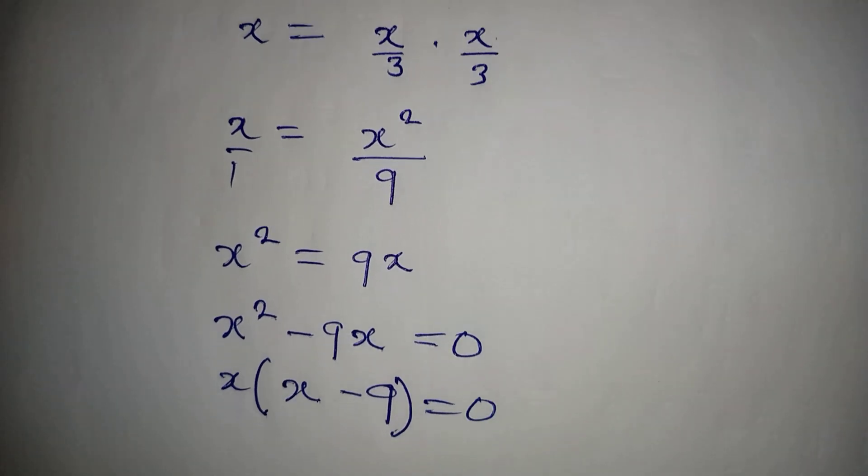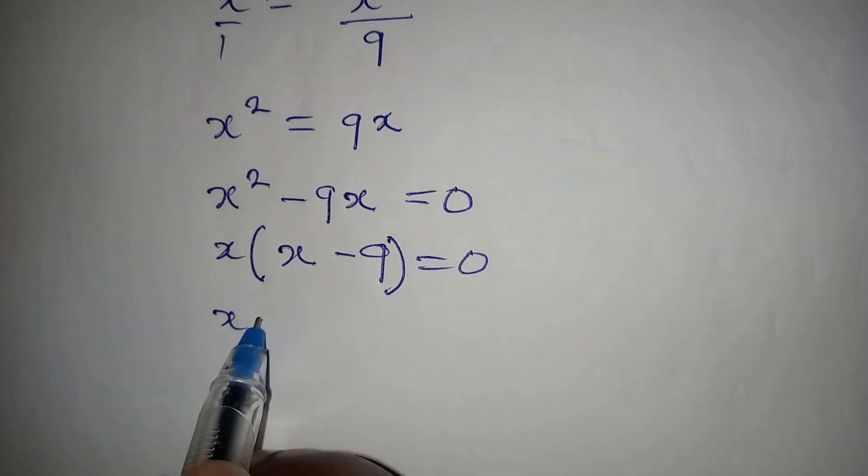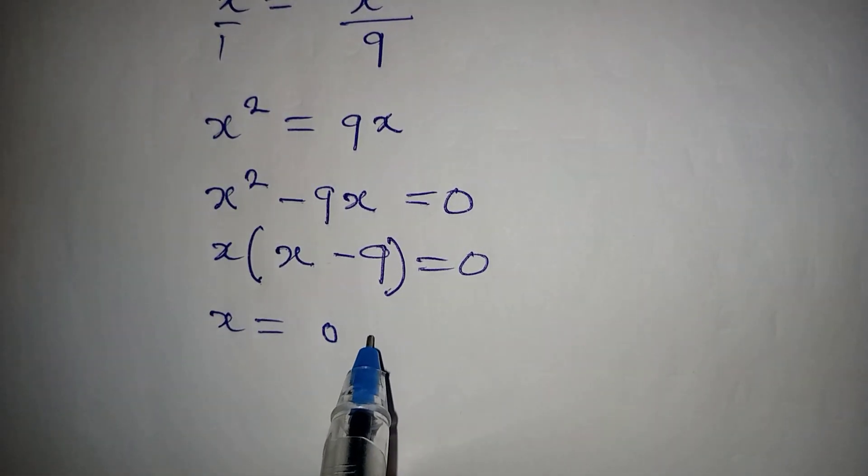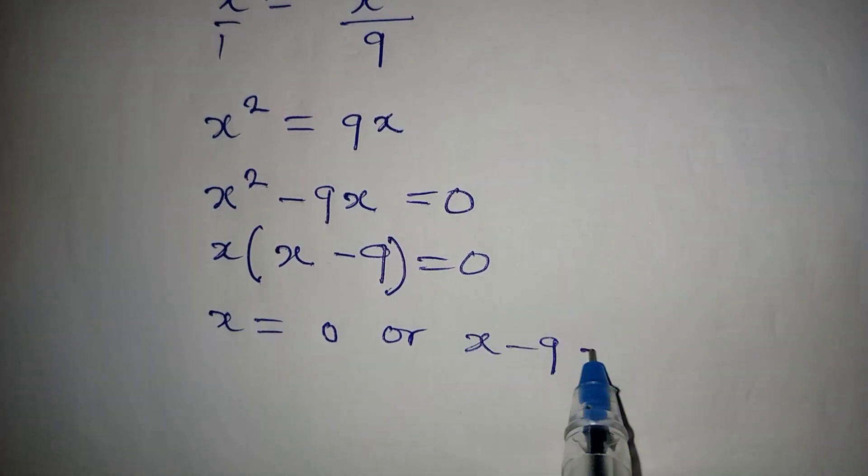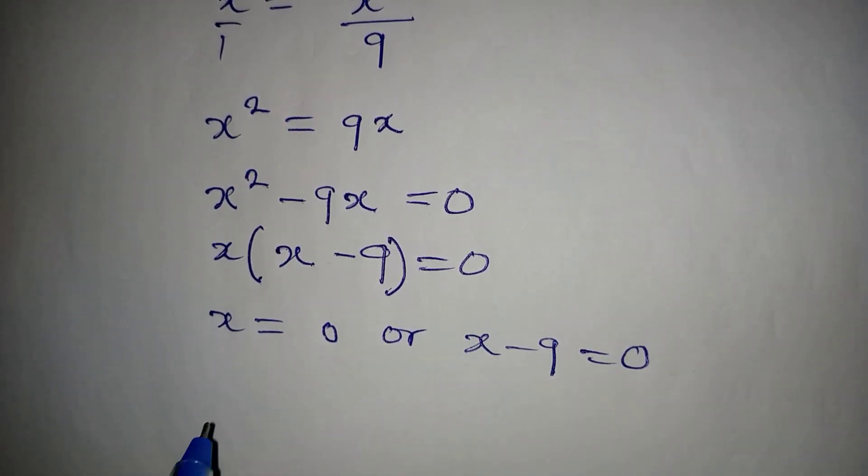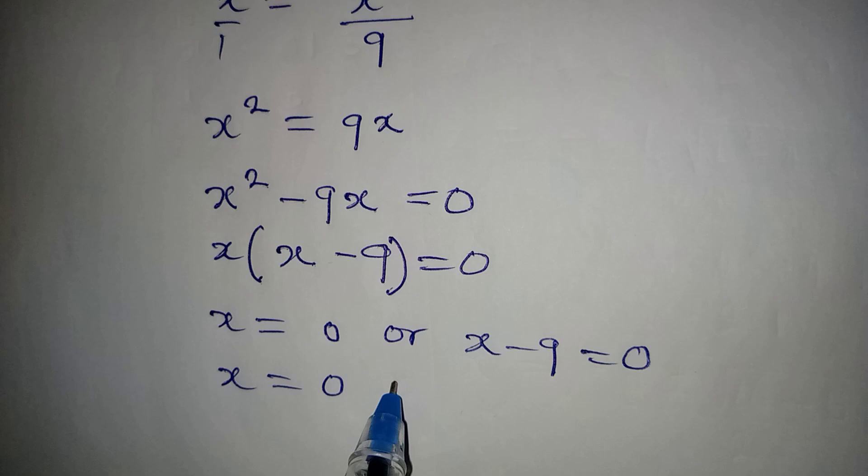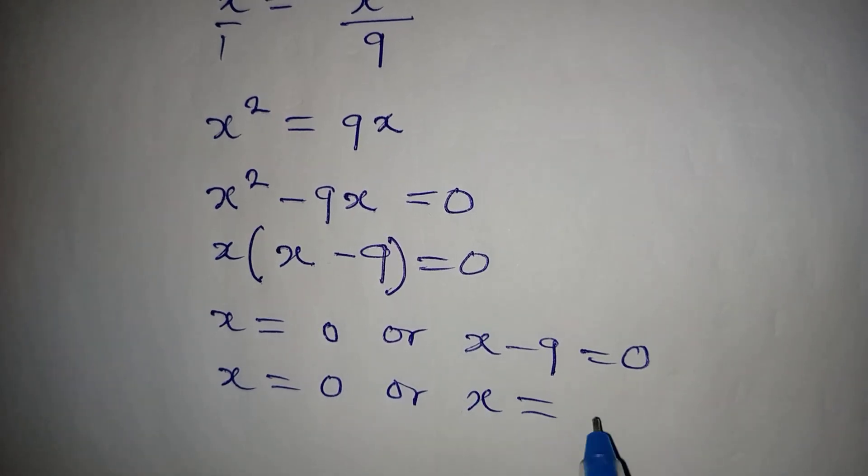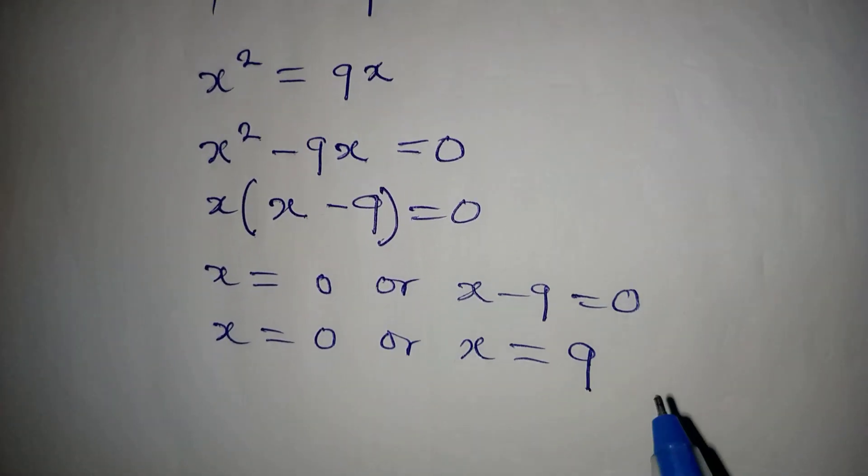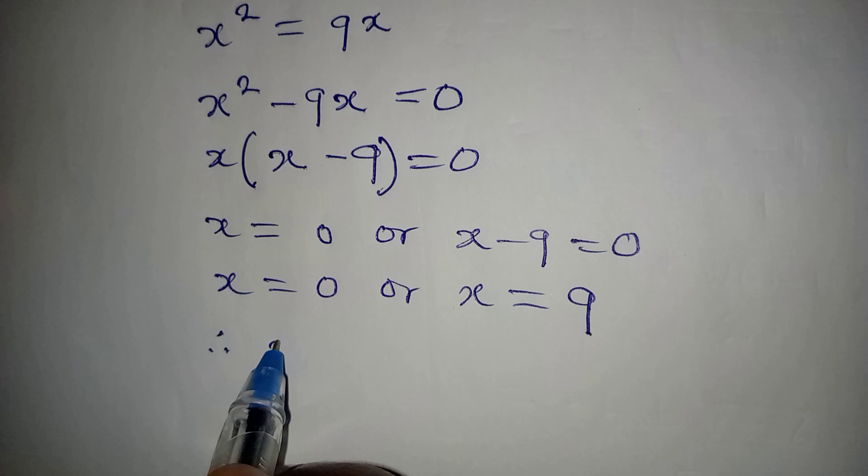So this means that x is equal to 0, or x - 9 is equal to 0. x here remains 0, or x is equal to 9. So the values of x: x is equal to 0 or 9.